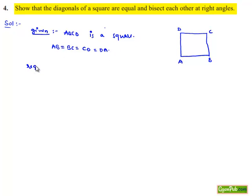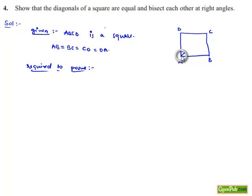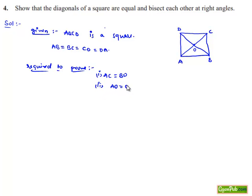We are required to prove that diagonals of the square are equal and bisect each other at right angles. The diagonals are AC and BD. We need to prove first that AC is equal to BD, and second that they bisect each other at right angles. Let us assume that diagonals intersect at point O. We need to prove AO equals OC and OB equals OD, and that angle AOB equals angle BOC equals angle COD equals angle AOD equals 90 degrees.